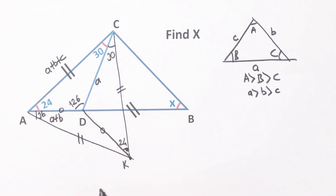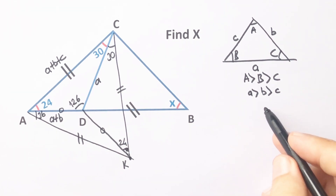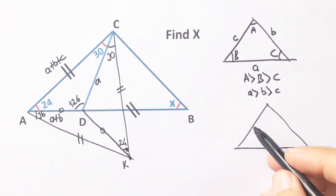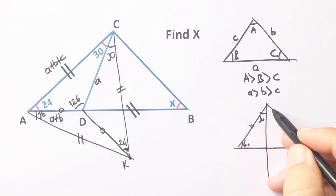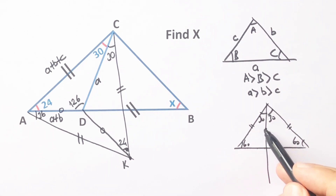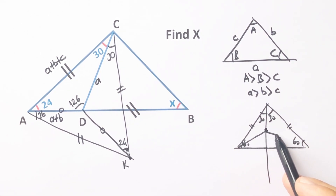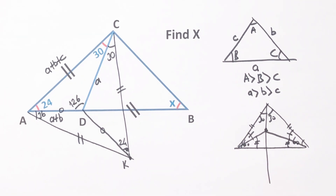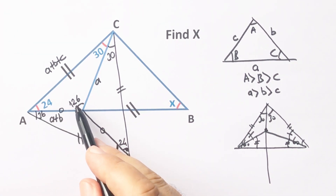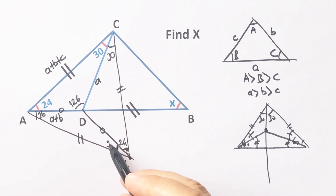AD must equal DK, and here must equal 24 degrees. Remember: if we have an equilateral triangle and a bisector line, and we take a point on this line, the two angles on each side must be equal. So here must equal 36 degrees because DC is a line of symmetry.